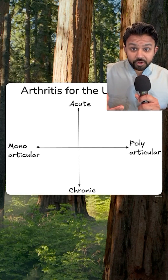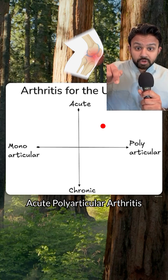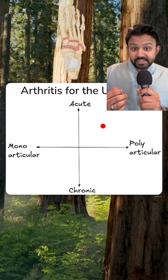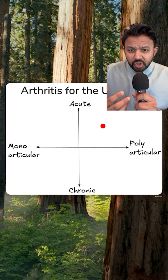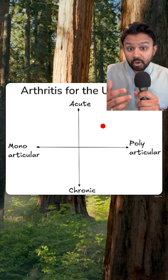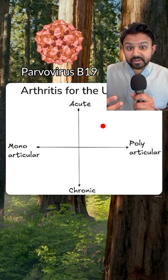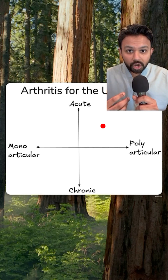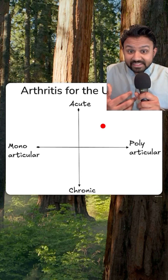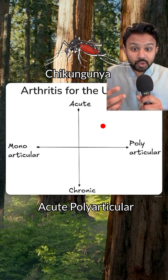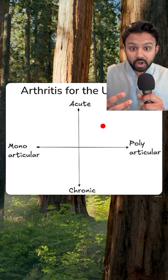If you have a patient with acute polyarticular arthritis, which means it affects multiple joints, you're still going to be thinking about infectious arthritis, but you're going to be thinking more viral — things such as parvovirus B19. Watch in the vignette: they may give you that the patient is a daycare worker. Or if the patient had some travel, chikungunya can also cause an acute polyarticular migratory arthritis.